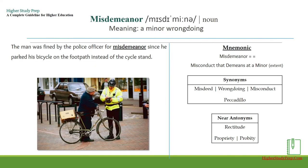'Misdemeanor' is a noun meaning a minor wrongdoing. Example: the man was fined by the police officer for a misdemeanor, since he parked his bicycle on the footpath instead of the cycle stand.